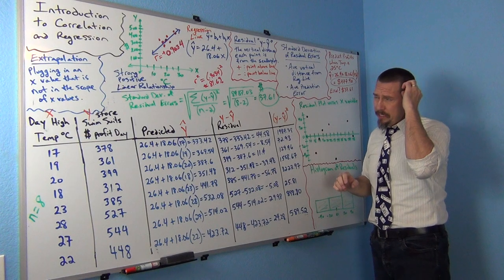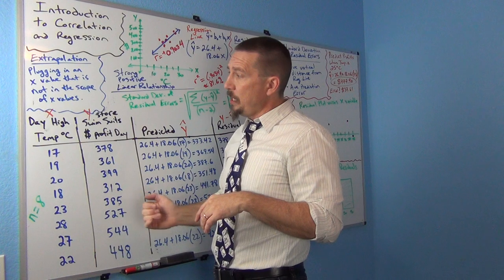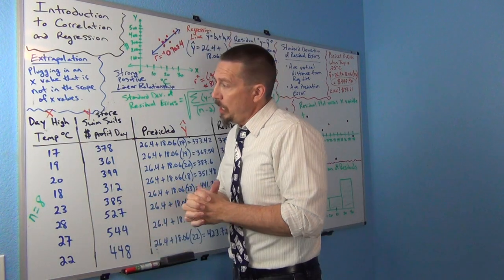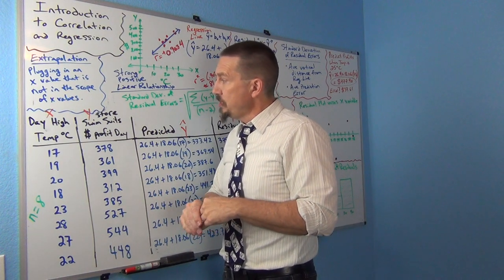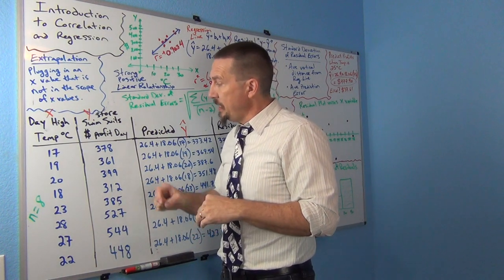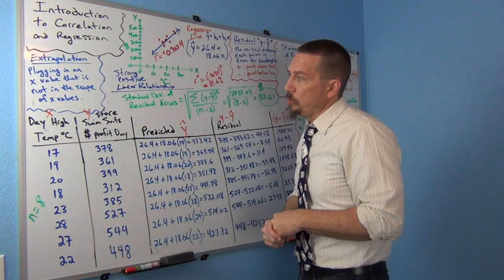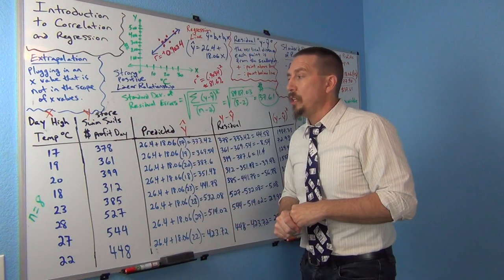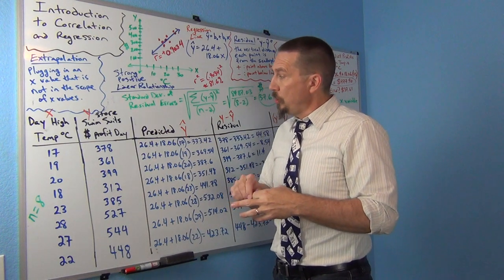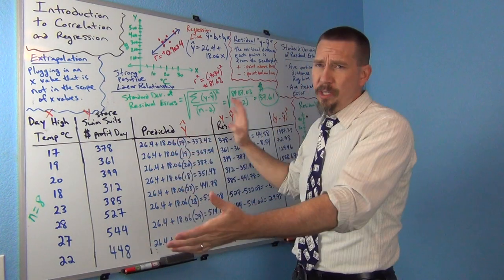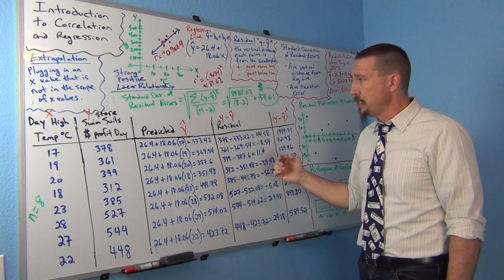So let's look a little bit at the same example we picked up on last time. Our X value was the temperature, high temperature of the day. And then we looked at how much profits a store that sells swimsuits made that day. So looking at swimsuit profits versus temperature. Temperature was the X and swimsuit dollars profit was the Y.